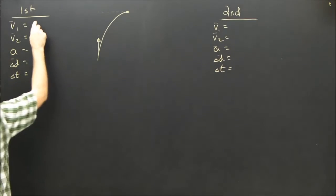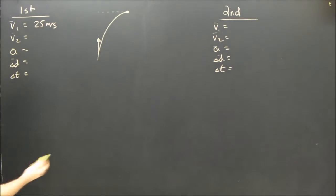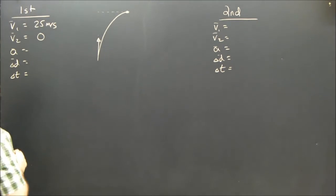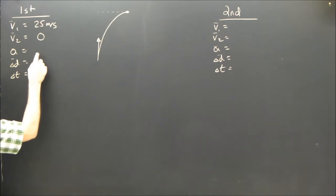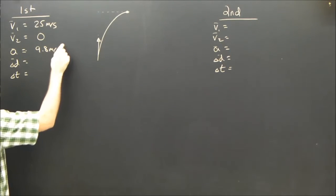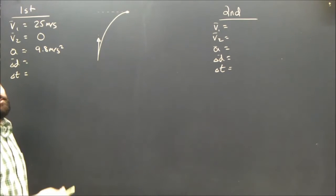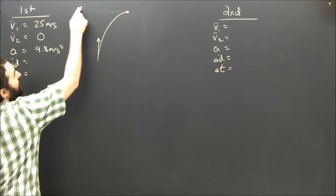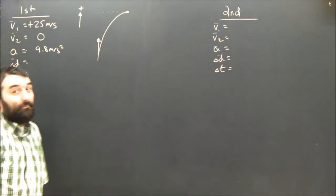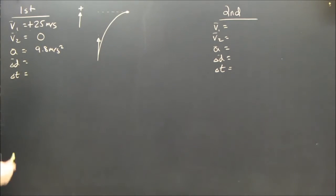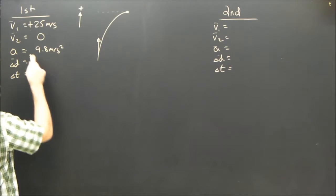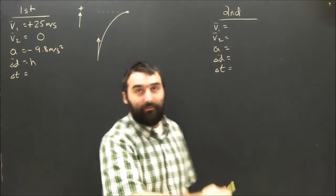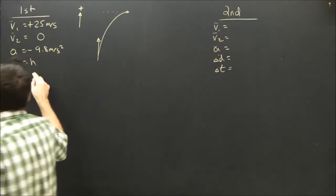The first arrow is shot upwards with a speed of 25 meters per second. It has a velocity of zero at the top of its flight. Its acceleration is due to gravity: 9.8 meters per second squared downward, so it's negative. Since up is positive, V1 is +25, A is negative 9.8. The displacement D is the maximum height H that arrow 1 achieves, and the time T is unknown.